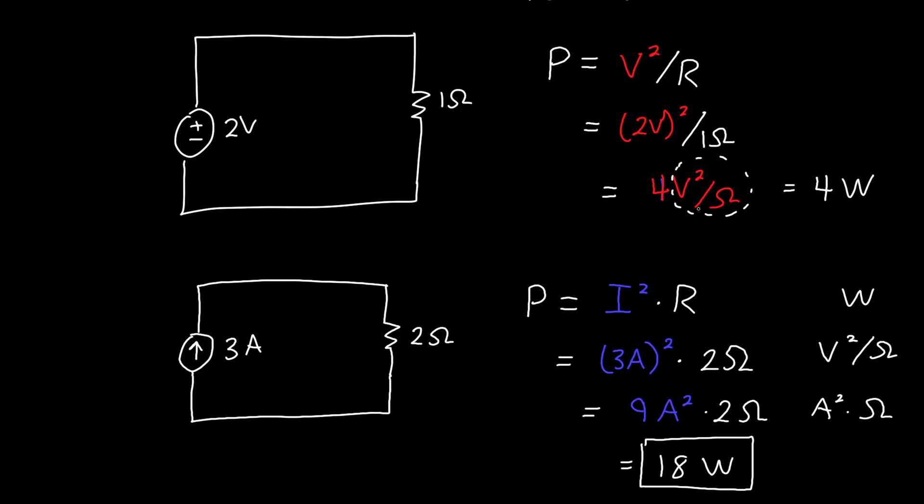Now if you happen to forget the formula in terms of voltage or current, you can always go back to the most general formula, which is that power is equal to voltage times current. So if you know the current through the resistor, or you can figure it out, and you know the voltage across the resistor, or you can figure it out, you can always use this equation to figure out the power dissipated in a resistor. Things get a little more complicated when stuff changes with time. And in that case, this is what's known as the instantaneous power. It's the power dissipated at any given instant if the voltage and current are functions of time.